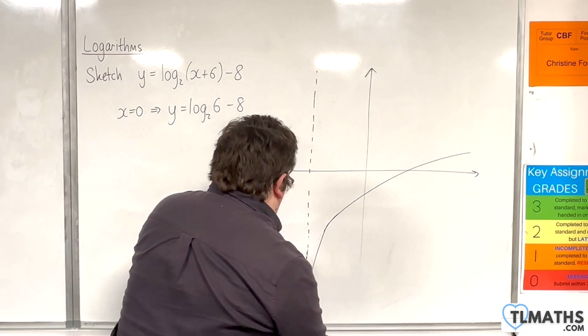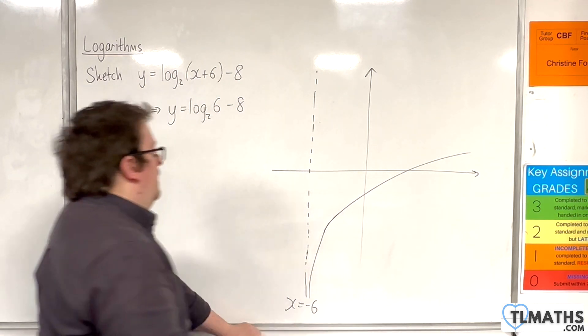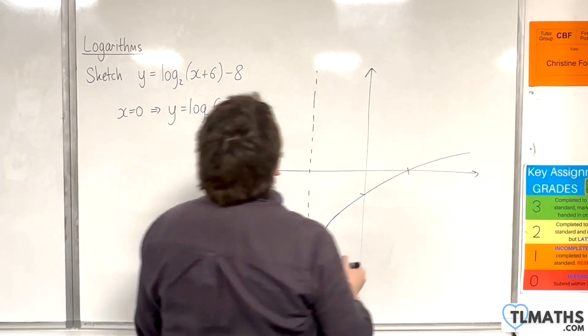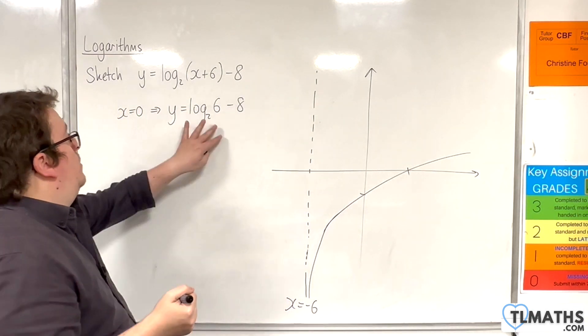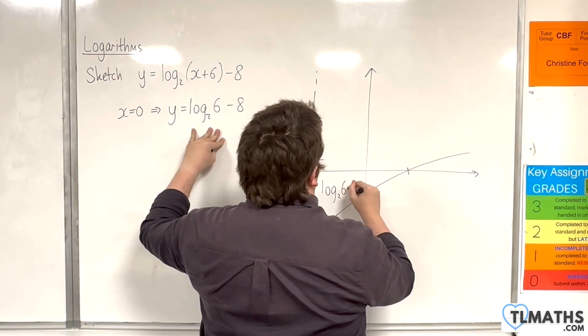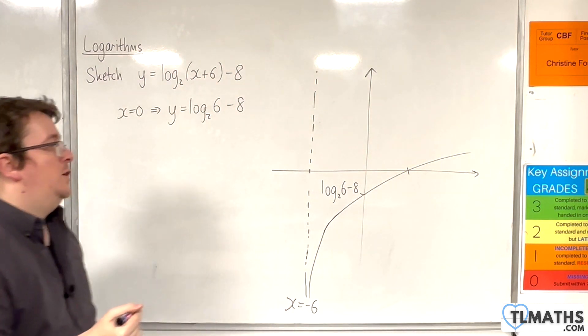So that's x equals minus 6. And so there are two points of intersection that I'm interested in. Now, when x is 0, we get that. So that is the exact point where it crosses the y-axis, log base 2 of 6, take away 8.